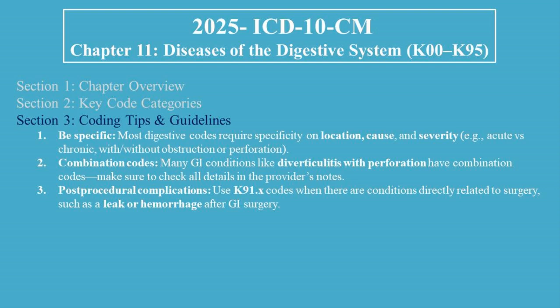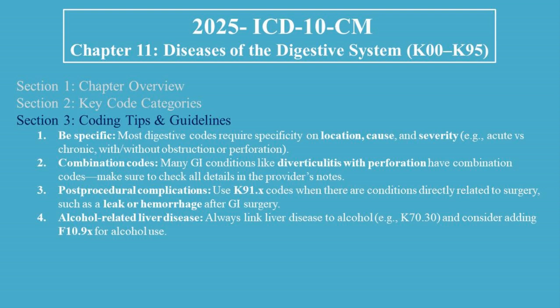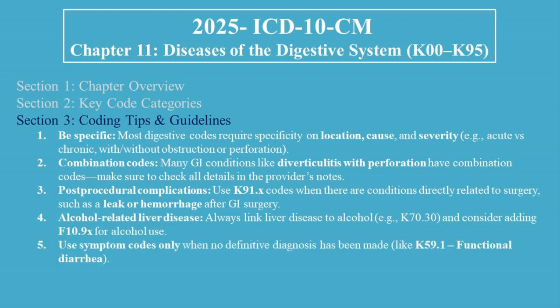Tip 3 — Post-procedural complications: use K91.x codes when there are conditions directly related to surgery, such as a leak or hemorrhage after GI surgery. Tip 4 — Alcohol-related liver disease: always link liver disease to alcohol (e.g., K70.30), and consider adding F10.9x for alcohol use. Tip 5 — Use symptom codes only when no definitive diagnosis has been made, like K59.1 for Functional Diarrhea.